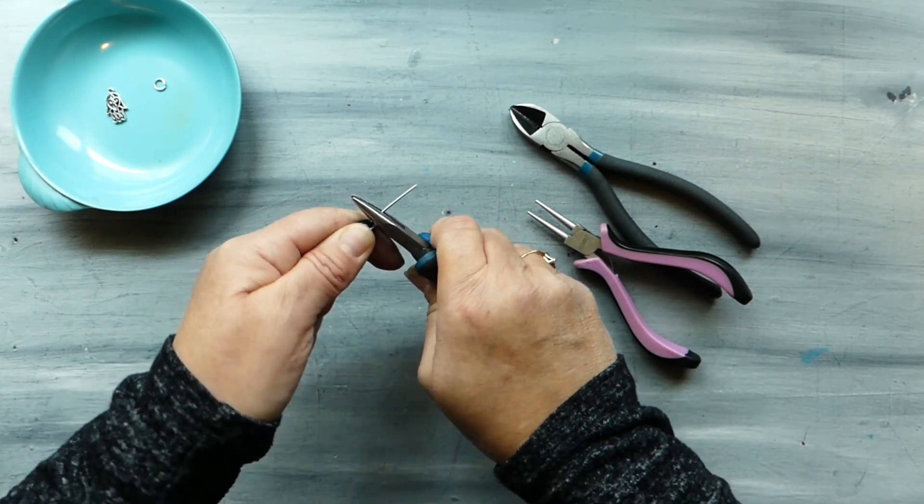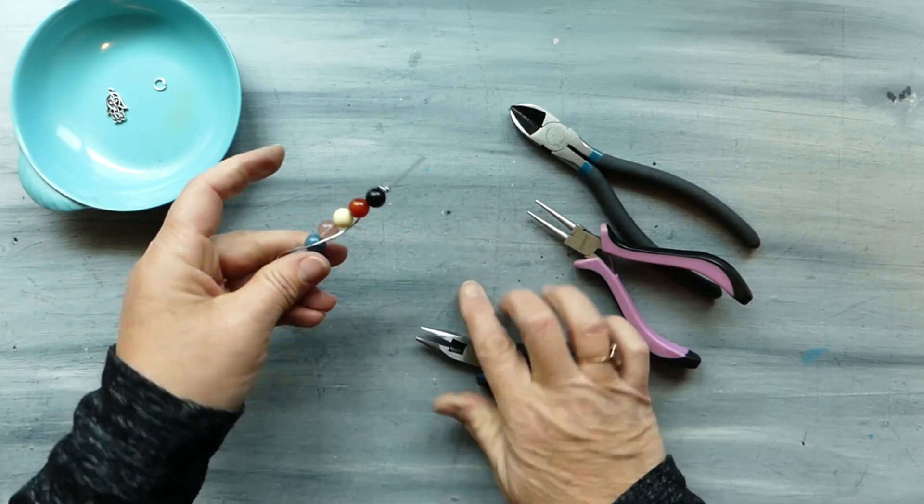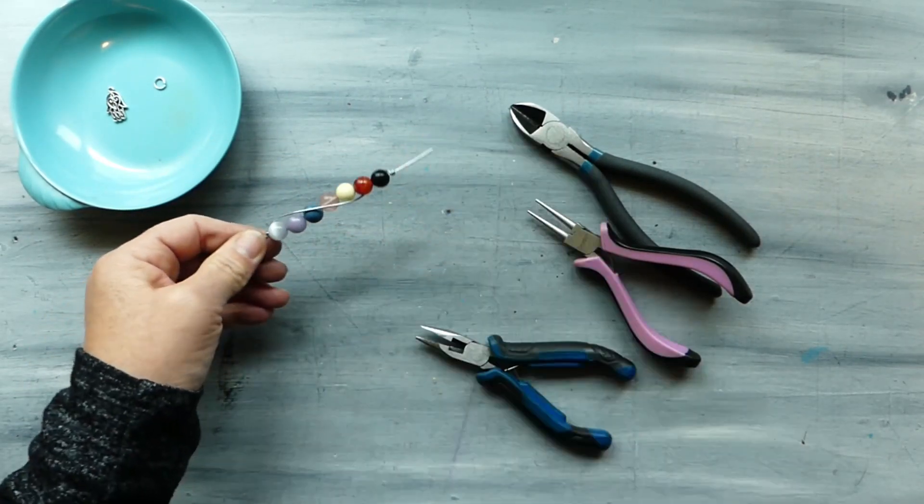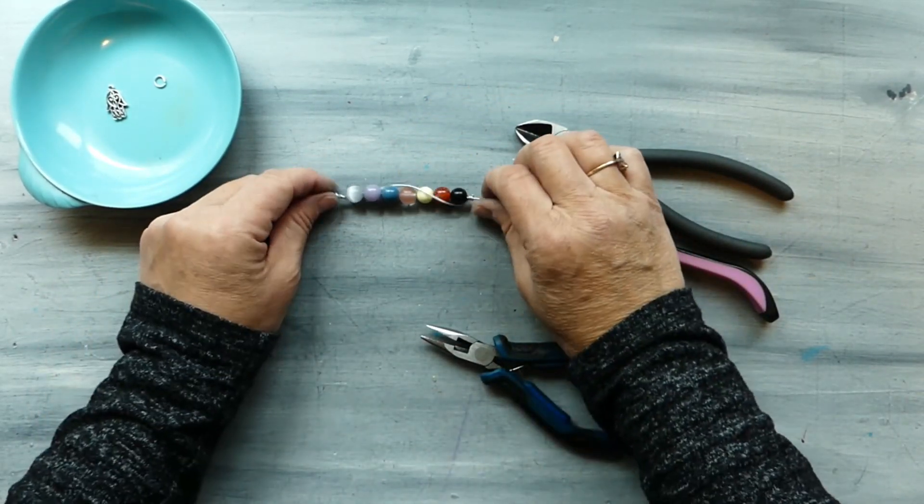Now if you find it ends up being too long and you have to do more than a couple of twists, by all means cut it off. All right so that is the main body of our key ring.